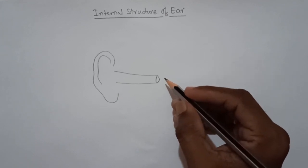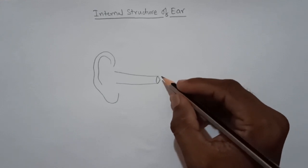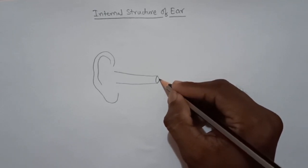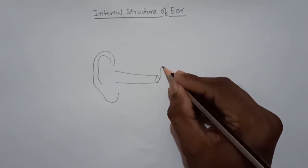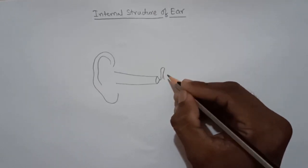The three ossicles are malleus, incus, and stapes. First one we have to draw is malleus here, like this. We have to draw malleus and incus.